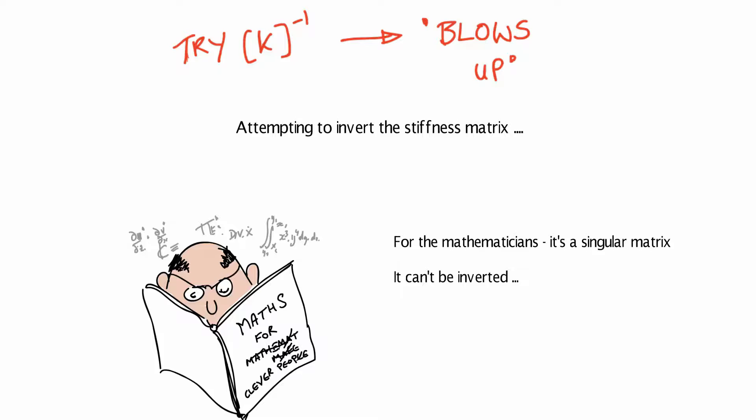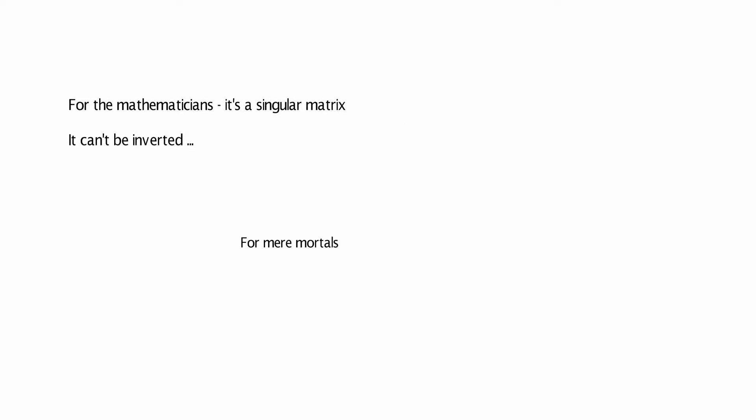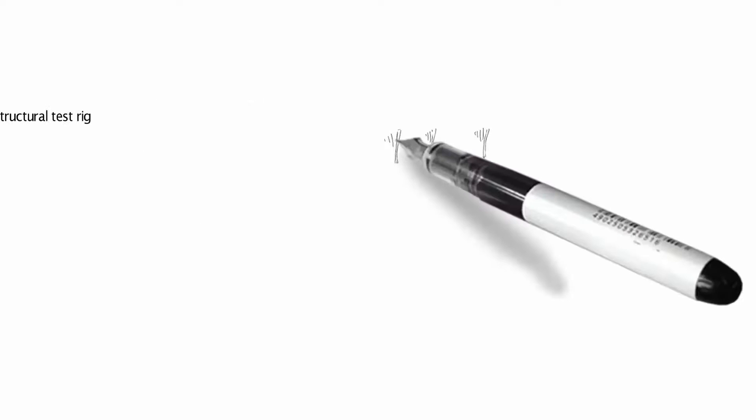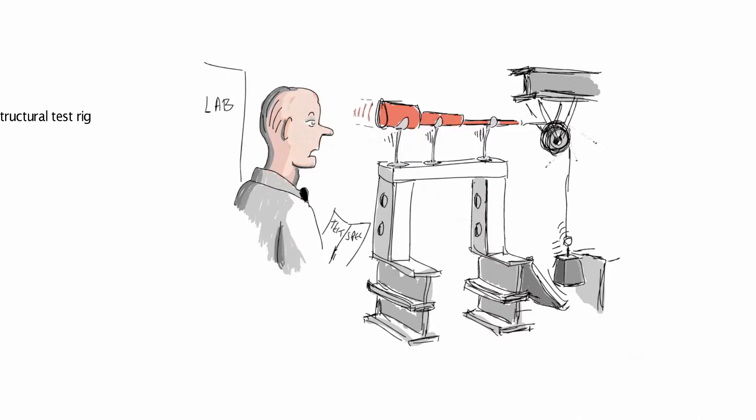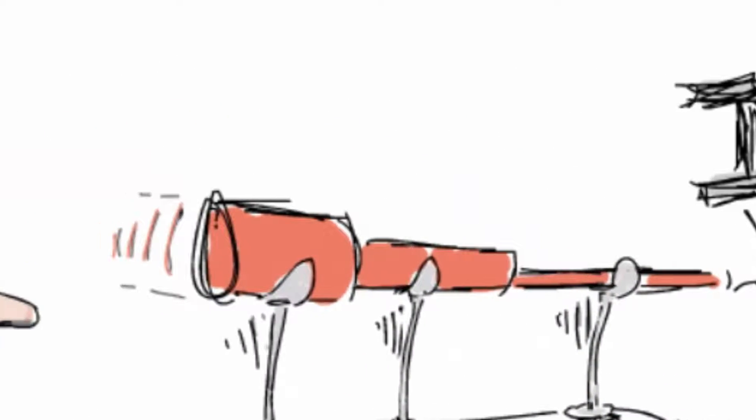A better engineering analogy would be if we gave a specification to our test lab and forgot to define the constraints that we're going to apply to the experiment. So what should be a nice safe static test turns into a violent dynamic test, force equals mass times acceleration.